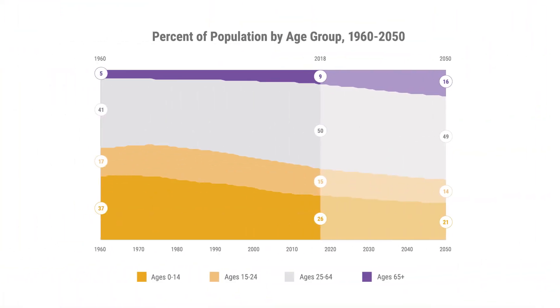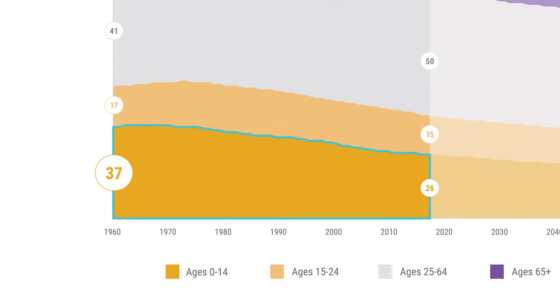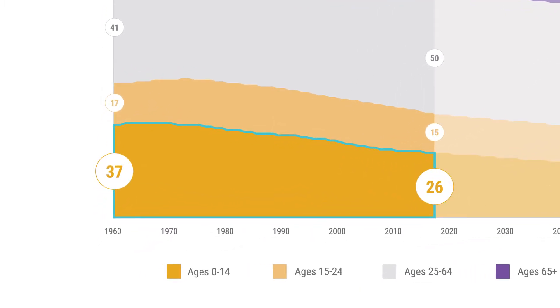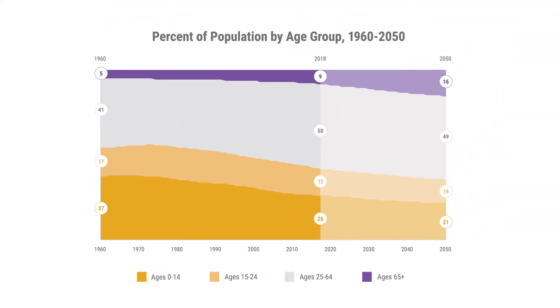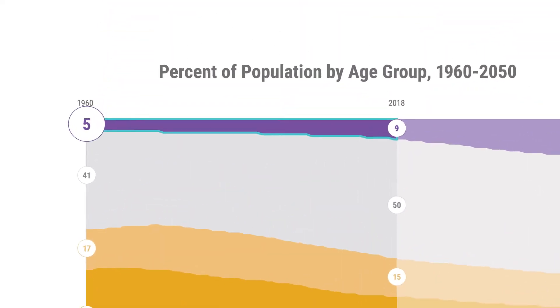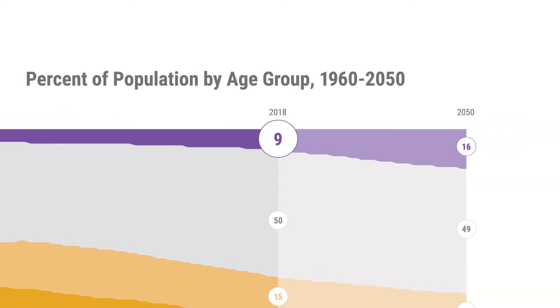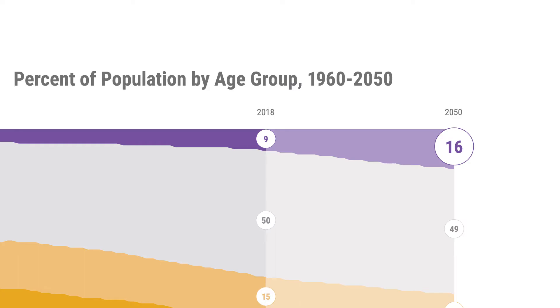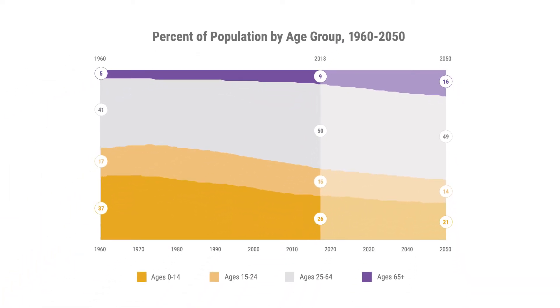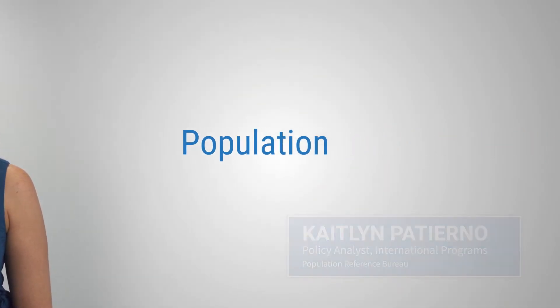Since 1960, the share of children ages 0 to 14 has declined from 37 to 26 percent of the total population. During the same period, the share of older adults ages 65 and over increased from 5 to 9 percent. Projections show that older adults will make up 16 percent of the global population by 2050. We refer to this shift towards a population with a larger share of older adults as population aging.